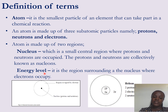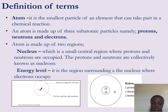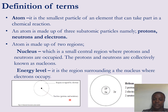The other region of an atom is known as the energy level. This is the region surrounding the nucleus where electrons are found. Looking at the diagram of an atom, we can see the nucleus as a very small central region where protons and neutrons are located, and the outer region where electrons occupy is the energy levels.